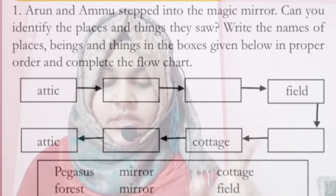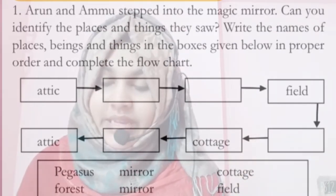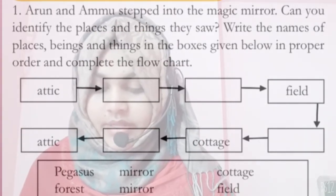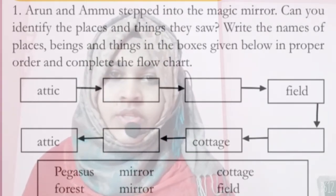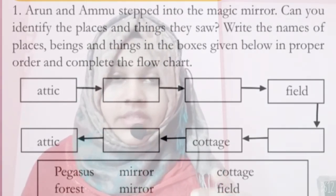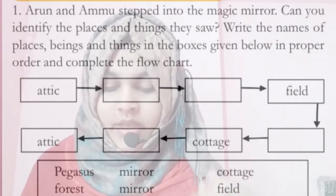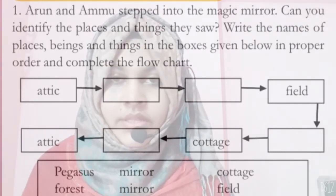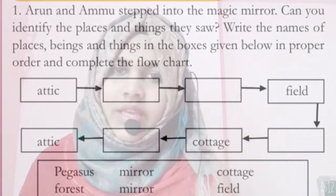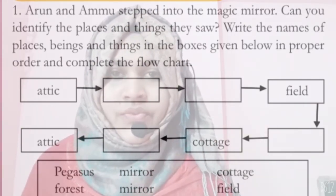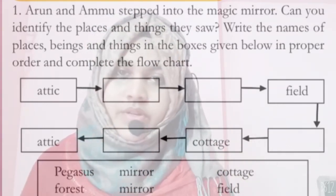The flow chart starts with Attic. Then the next boxes include the forest, then field, then cottage, and the last box is Attic again. You can choose your answers from the table given below: Pegasus, Mirror, Cottage, Forest, Mirror, and Field. Cottage and field are already given, so choose the remaining answers: Pegasus, Mirror, Forest, and Mirror.